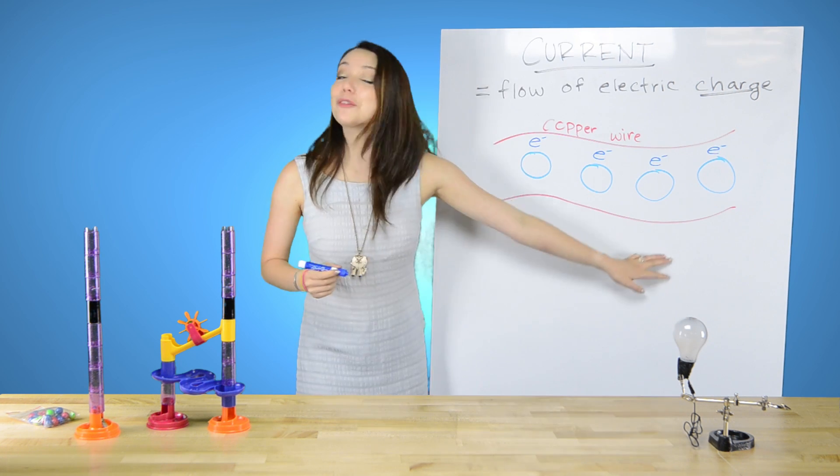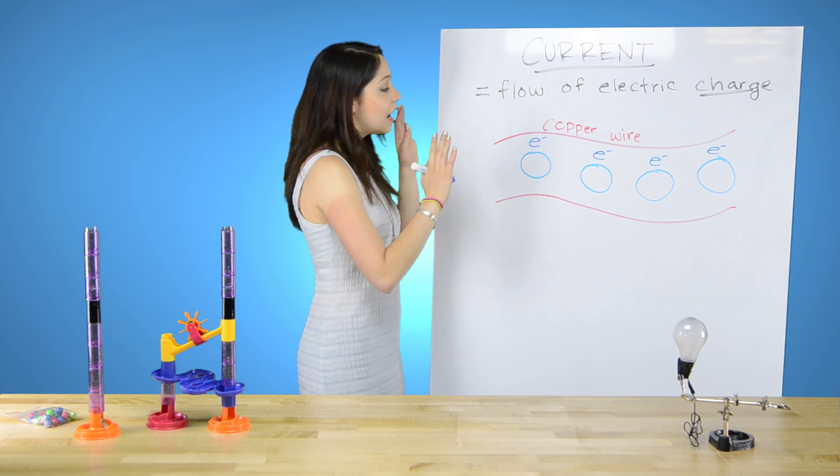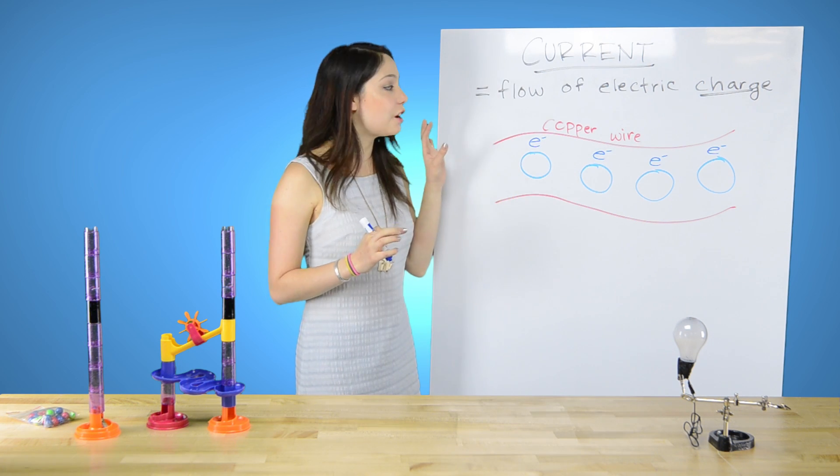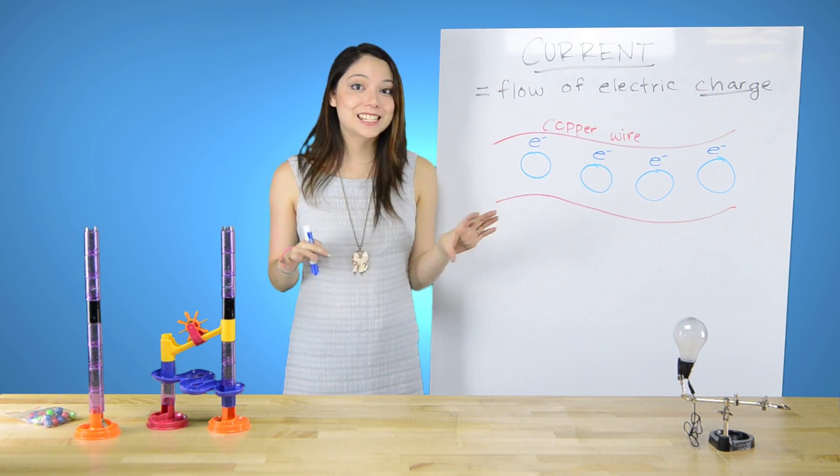So this is a perfectly happy copper wire in equilibrium. There's no current flowing. It's just got a bunch of nuclei, a bunch of electrons. Everything's sitting still.